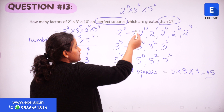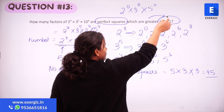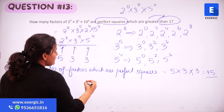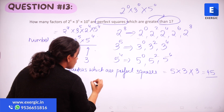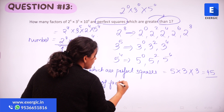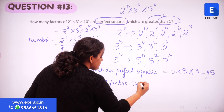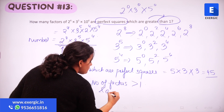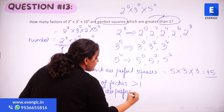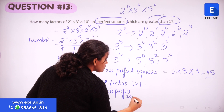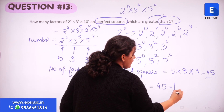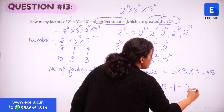But we want factors which are greater than 1, so we need to exclude this case. Therefore, the number of factors which are perfect squares and greater than 1 is 45 minus 1, which equals 44. That's the final answer.